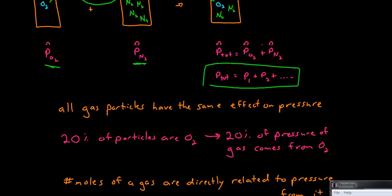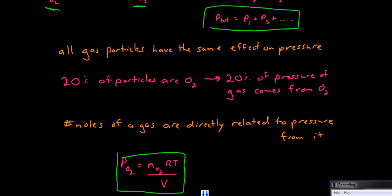We can describe the average kinetic energy of particles by their temperature. In fact, temperature is directly related to the average kinetic energy of a gas. We could say that the average kinetic energy of oxygen particles at a given temperature is the same as the average kinetic energy of nitrogen particles at a given temperature. For a temperature of, say, 298 Kelvin, both nitrogen and oxygen have the same average kinetic energy.